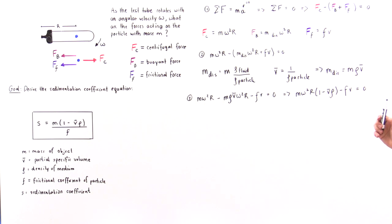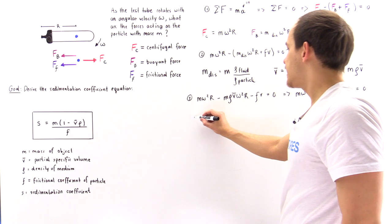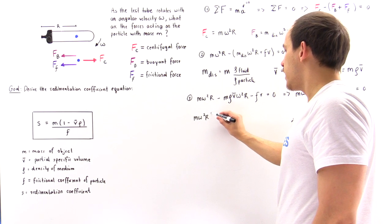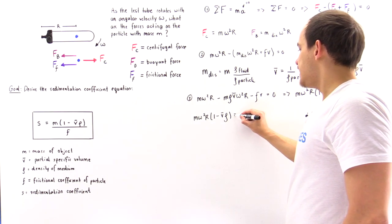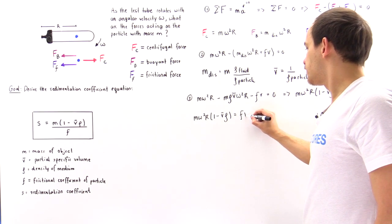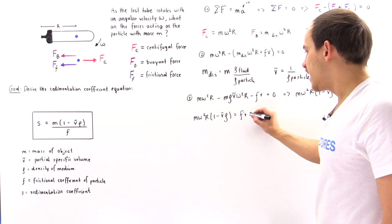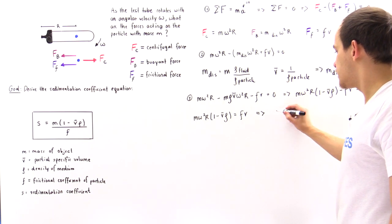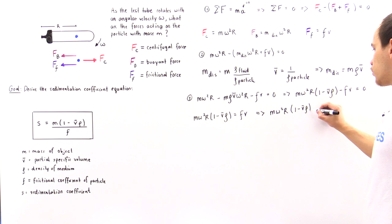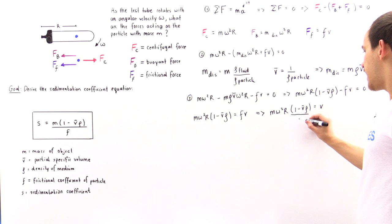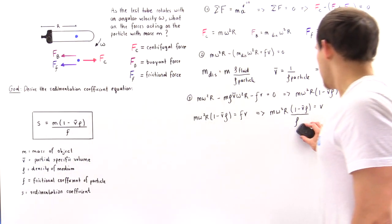Rearranging, we bring the frictional term to the right side: m·omega²·r·(1 minus v-bar·rho) equals f·v. Keeping velocity on the right and moving f to the left gives: v divided by f equals m·omega²·r·(1 minus v-bar·rho) / f — or equivalently, we solve for the velocity divided by f.